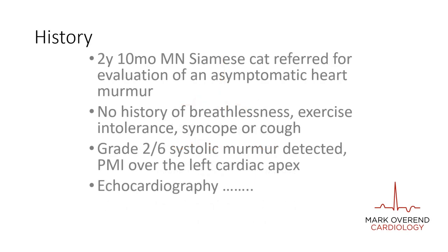This was a two year old male muted Siamese cat who was referred for further evaluation of a heart murmur. He was asymptomatic with no history of breathlessness, exercise intolerance, cough or syncope. On auscultation, a grade two out of six systolic murmur was heard with point of maximal intensity over the left cardiac apex. His systolic blood pressure was normal at 130 millimetres mercury and an ECG demonstrated sinus rhythm with no evidence of ectopy.